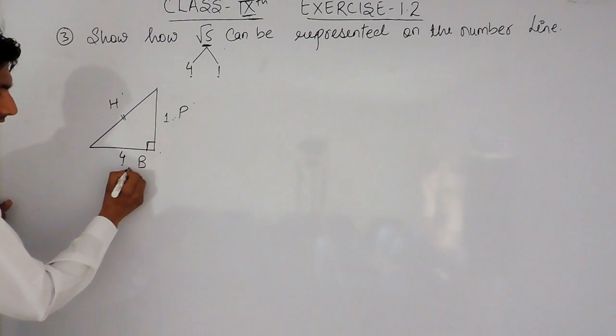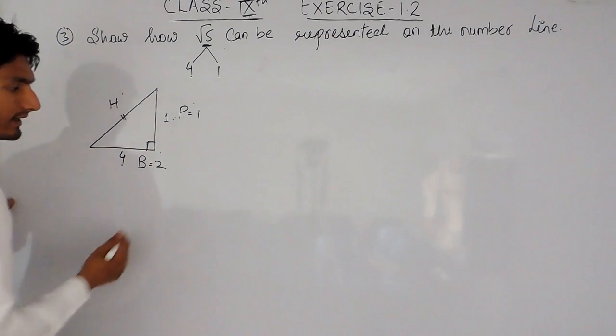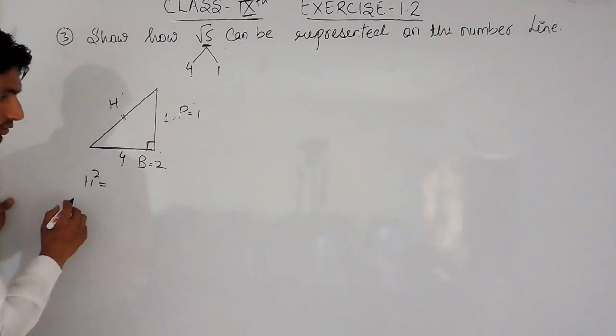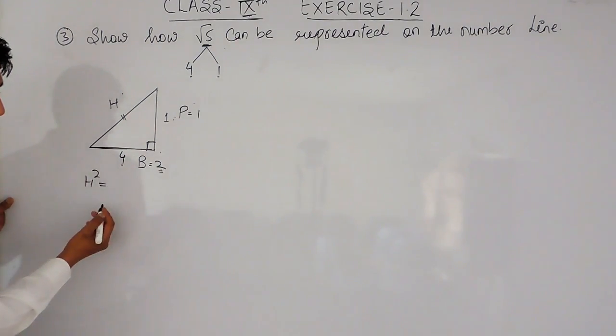if this is 4, the base will be equal to 2 and if this is 1, perpendicular can be considered 1. So, in that case, this hypotenuse square will be equal to this square. If I consider this as 2,